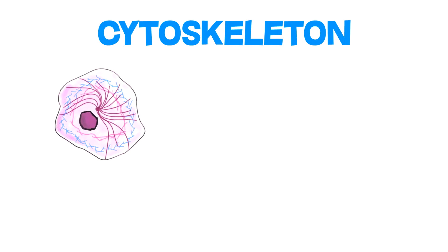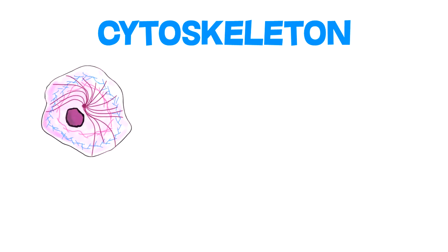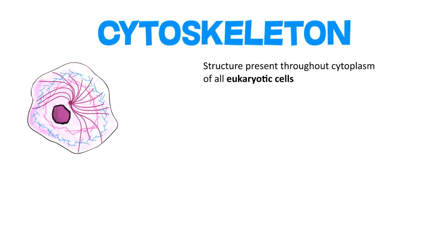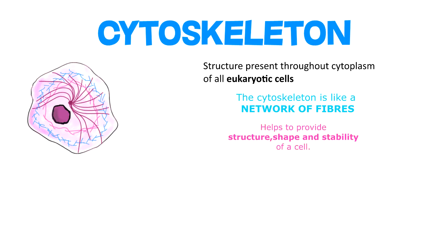The cytoskeleton is a structure present throughout the cytoplasm in all eukaryotic cells. It is a network of fibers which provide the structure and shape of a cell, and also helps to provide stability. Generally, the organelles of the cell are held in place by the cytoskeleton, which also helps to control cell movement.